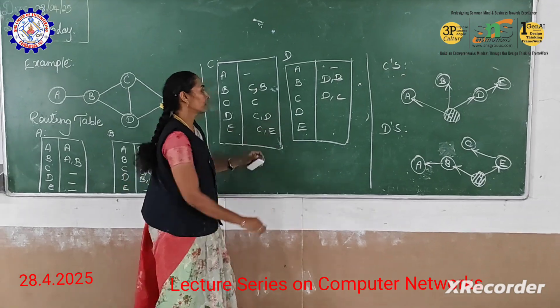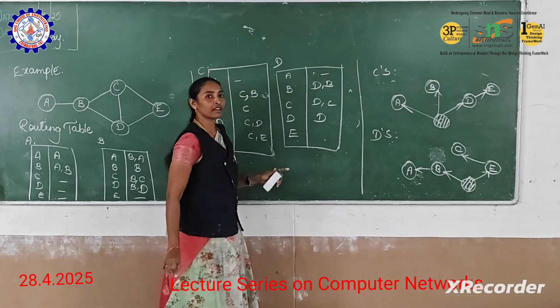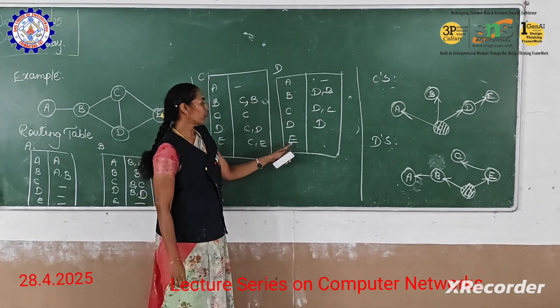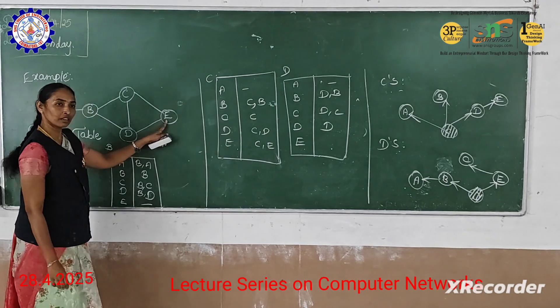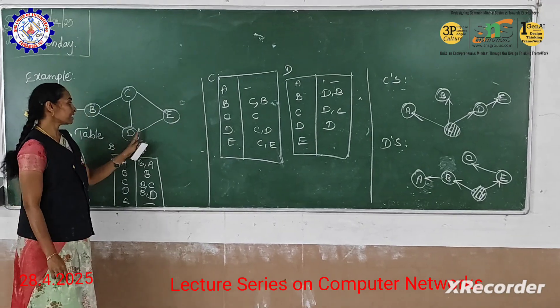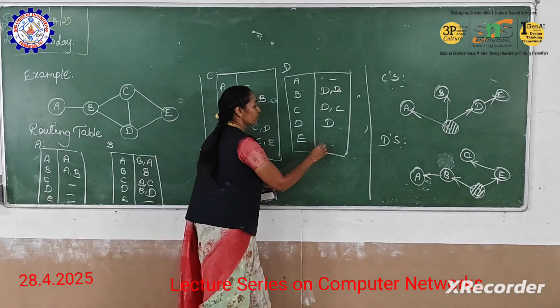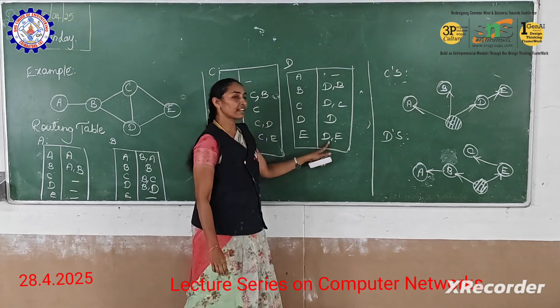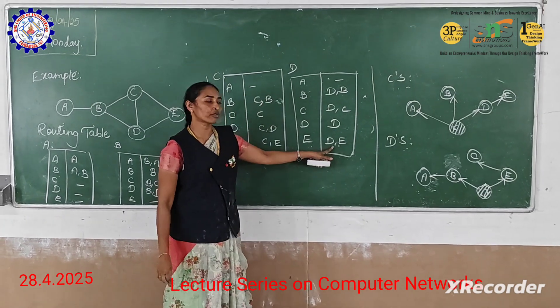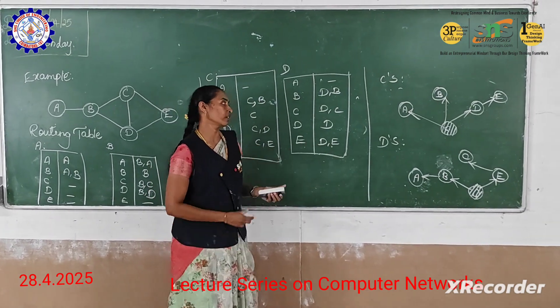Then from D to E, you can simply write as D. Then from D to E the link is available, so you can write as D comma E. Here D is the source node and E is the destination node.